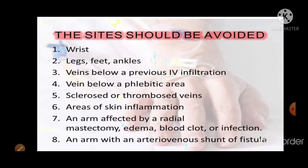Sites that should be avoided during cannulation include: wrists, legs, feet, ankles, veins below a previous IV infiltration, veins below a phlebitic area, sclerosed or thrombosed veins, areas of inflammation, the arm affected by a radical mastectomy, areas with edema, blood clot, or infection, and arms with an arteriovenous shunt or fistula.